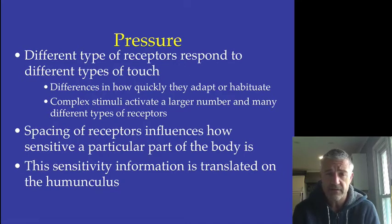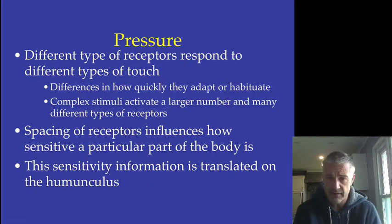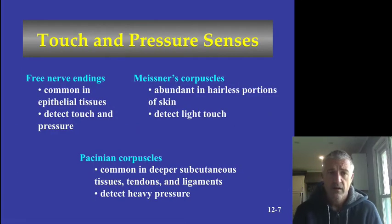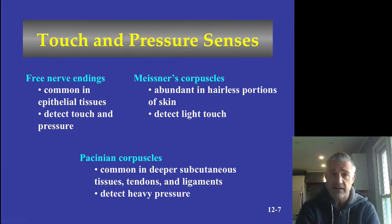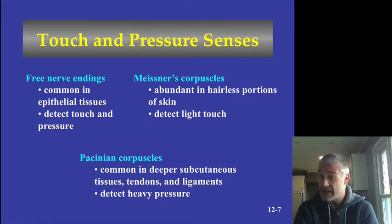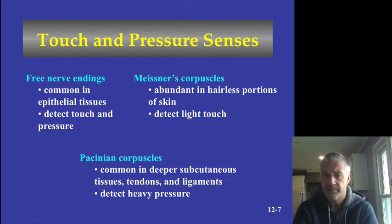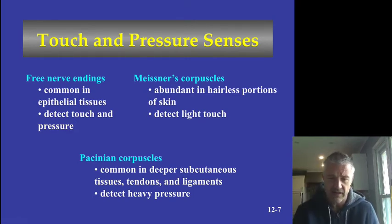Pressure receptors detect mechanical pressure on the receptor itself. Some have differences in how quickly they can adapt. In terms of mechanical pressure and touch receptors, there are three main types: free nerve endings that go up into the epithelial tissue detecting very light touch; Meissner's corpuscles in the upper dermis detecting light touch; and Pacinian corpuscles deeper in the dermis detecting heavier, squeezing pressure.